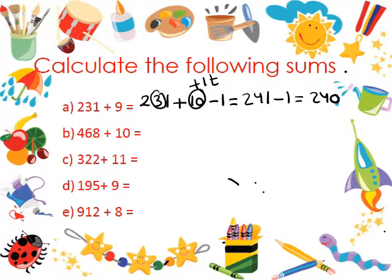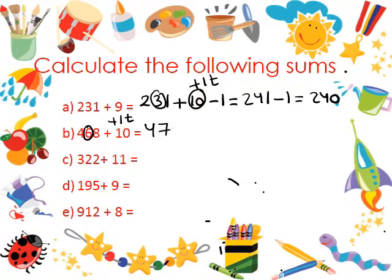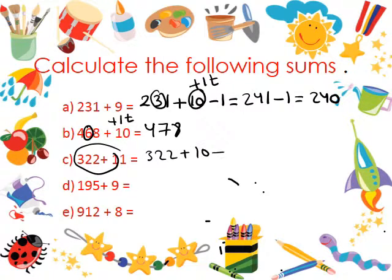For the second one, we have to find the number. We have to add plus 1 for the tens. Where is the tens value in 468? For the third one, 322 plus 1. We have to add plus 1 for the tens. Where is the tens value in 322?